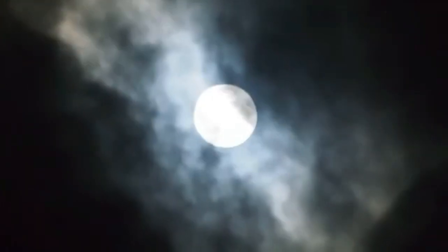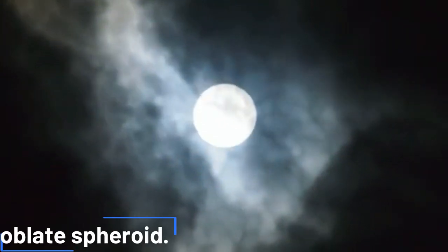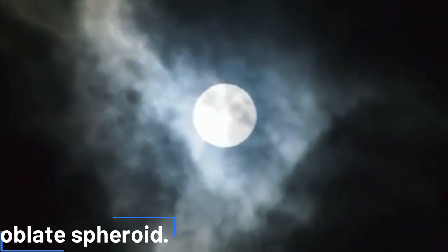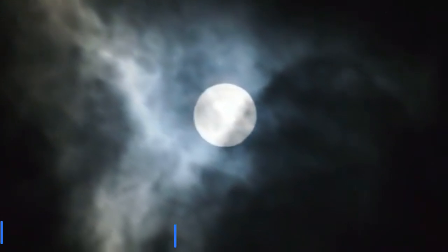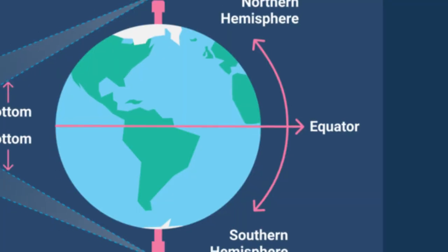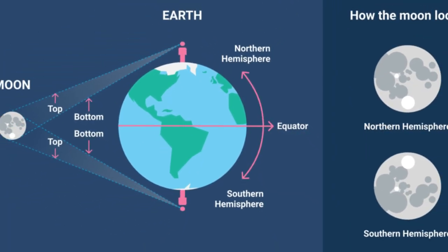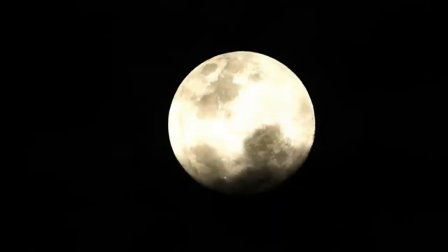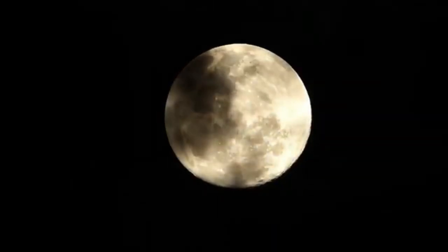The moon is not a perfect shape. It is actually an oblate spheroid. This means that the moon is slightly flattened at the poles and bulges out at the equator, due to the centrifugal force caused by the moon's rotation.